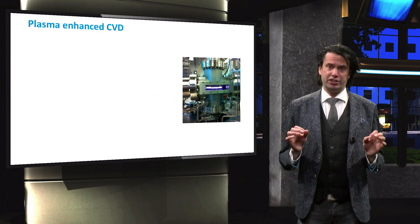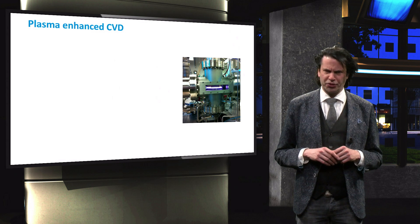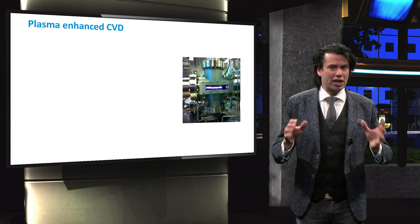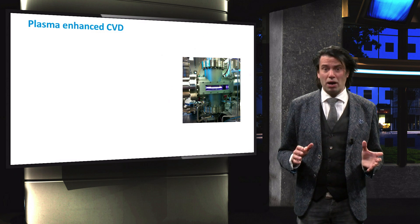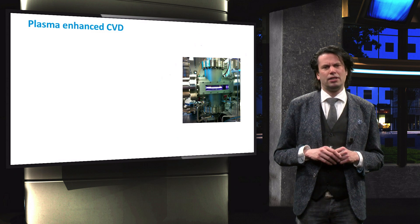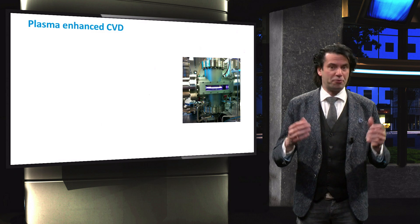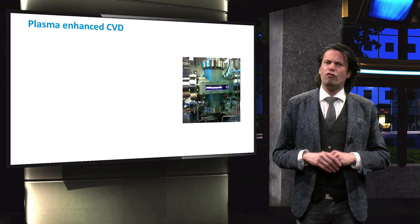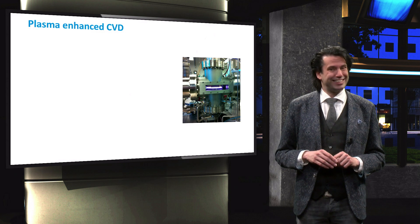The operation of conventional CVD generally requires high surface temperatures to dissociate the precursor gases. A popular method for thin film solar cells is plasma-enhanced chemical vapor deposition, shown in this picture. A plasma is a gas in which a fraction of the atoms or molecules are ionized. This reactive plasma environment is responsible for the dissociation of the precursor gases. Therefore, the PE-CVD allows for the deposition of thin film at low operating substrate temperatures, below 200 degrees Celsius.